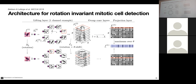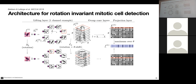By construction, this pooled feature vector is an invariant representation of the input patch. If you consider a particular orientation picked up by a filter and rotate the input, the same information is still in the neural network — it's just shifted to a different location in the rotation axis. There's no loss of information, and two rotated images produce practically identical representations after pooling. The oriented feature maps simply cycle through different rotation layers when the input is rotated.